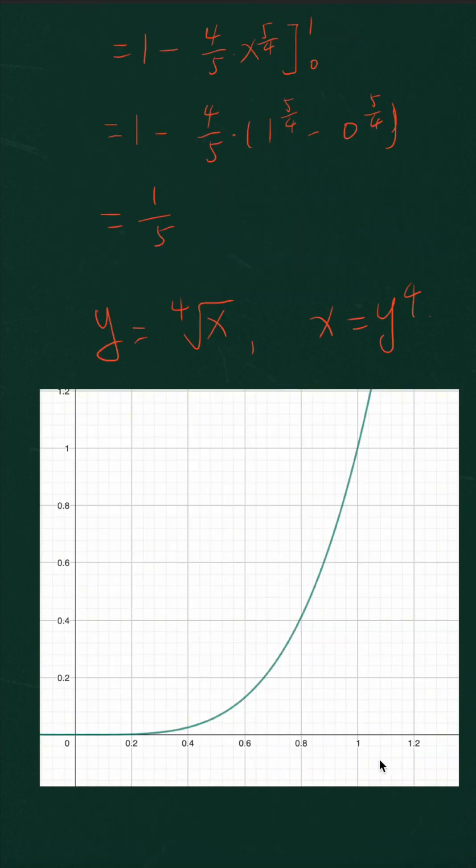In this graph, you can consider the horizontal one as the y axis and the vertical one as the x axis. So then this curve is the graph of the function x equals y raised to the power of 4.